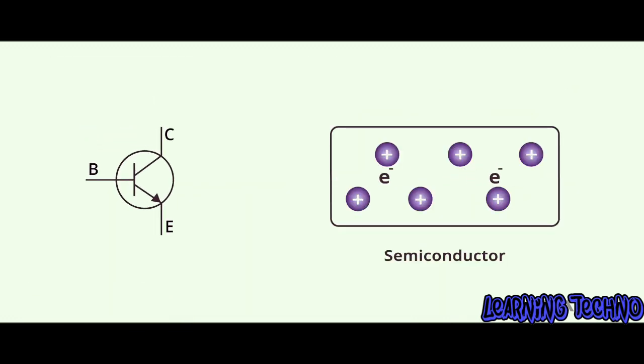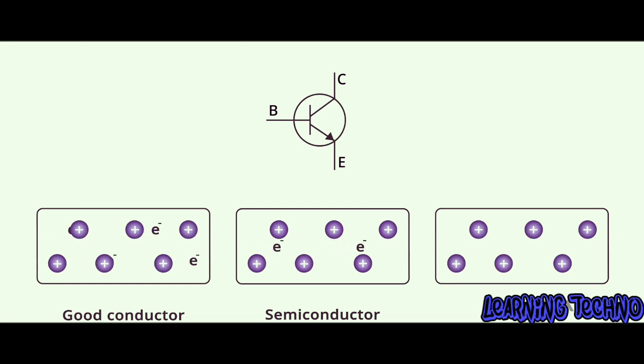A transistor is a semiconductor device. So what is a semiconductor? In simple terms, a semiconductor is not a good conductor, but neither is it a good insulator. It is somewhere in between.